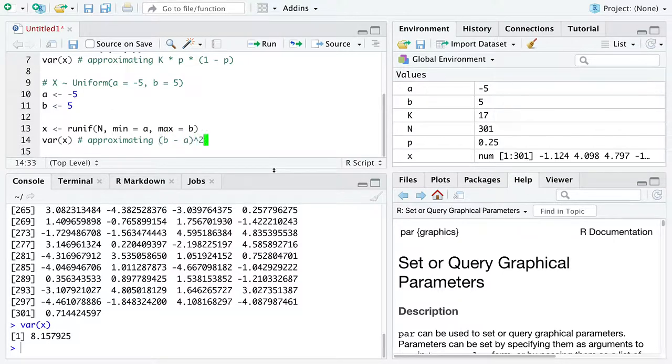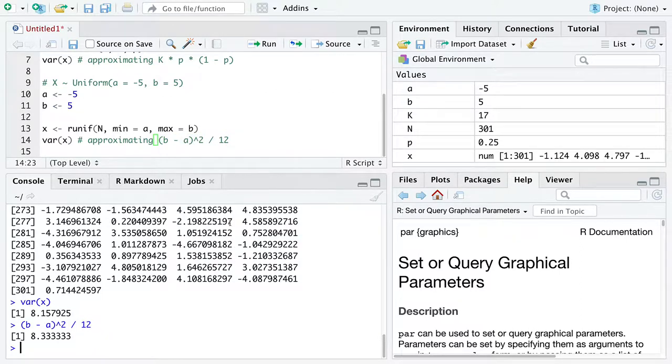So we've got b minus a squared over 12. And in fact, if we just copy that, type it in, indeed we see that 8.3, the distribution side variance, is pretty close to what our data side calculation is getting us. So that turns out to be totally cool.